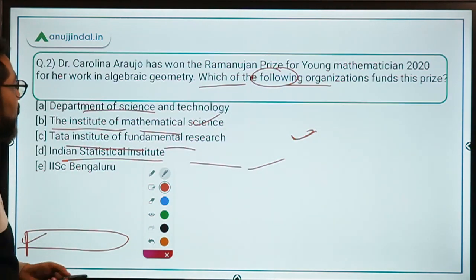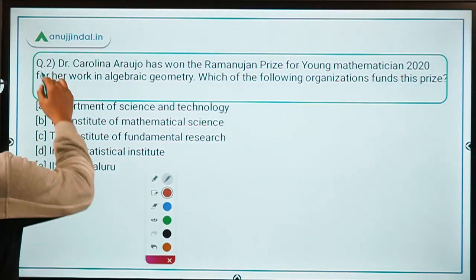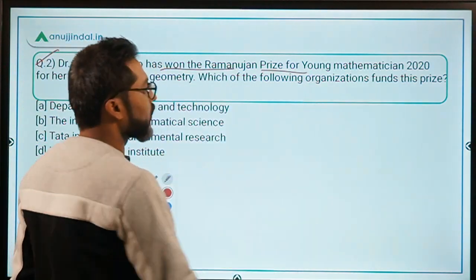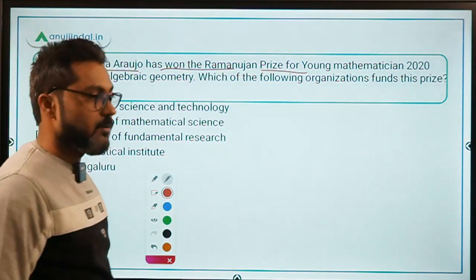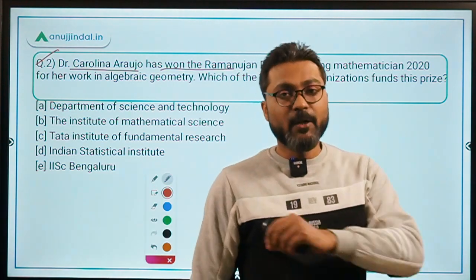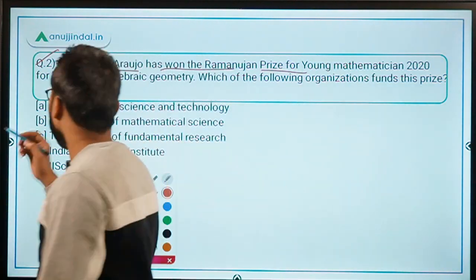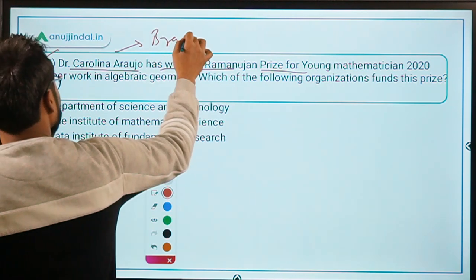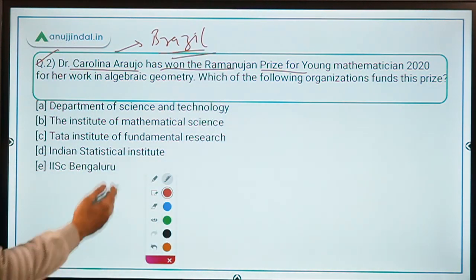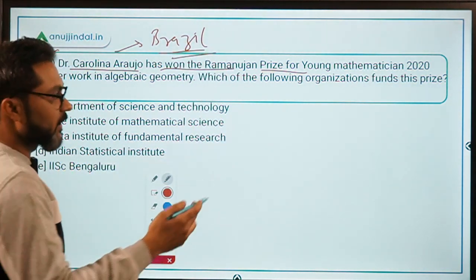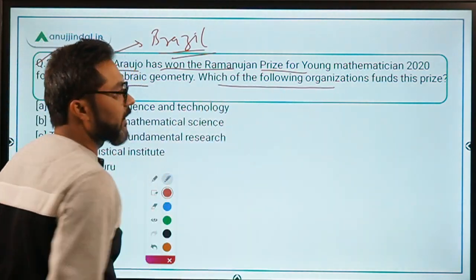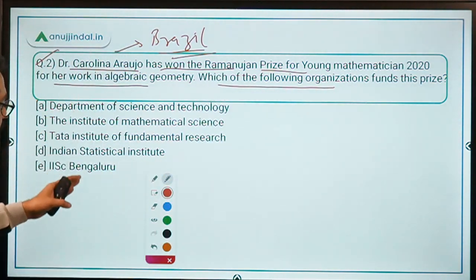Question number 2: Dr. Carolina Araujo has won the Ramanujan Prize for Young Mathematician 2020. She is the first non-Indian to win this prize and she is from Brazil. The question asks which of the following organizations funds this prize.